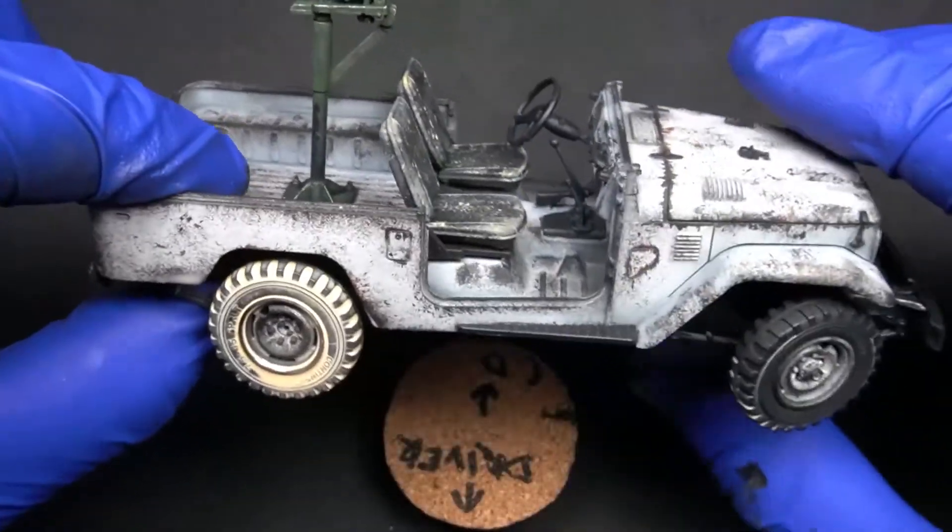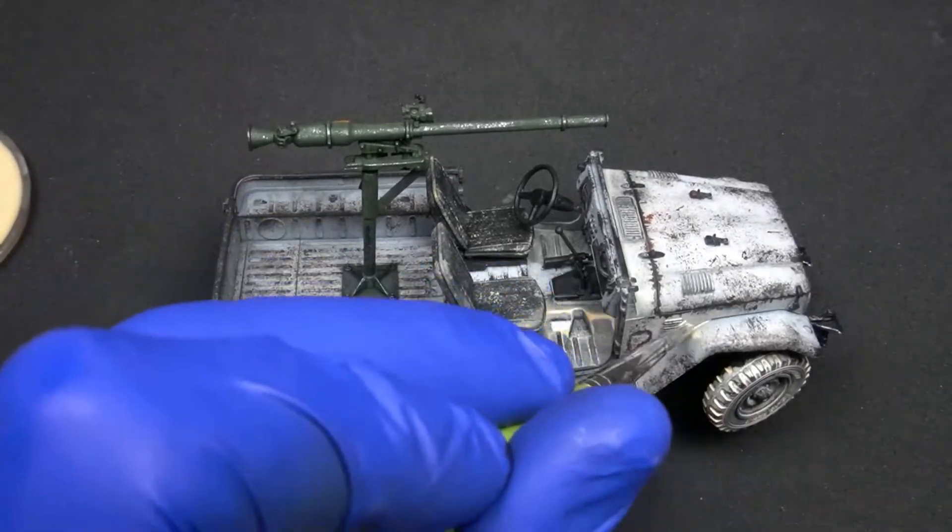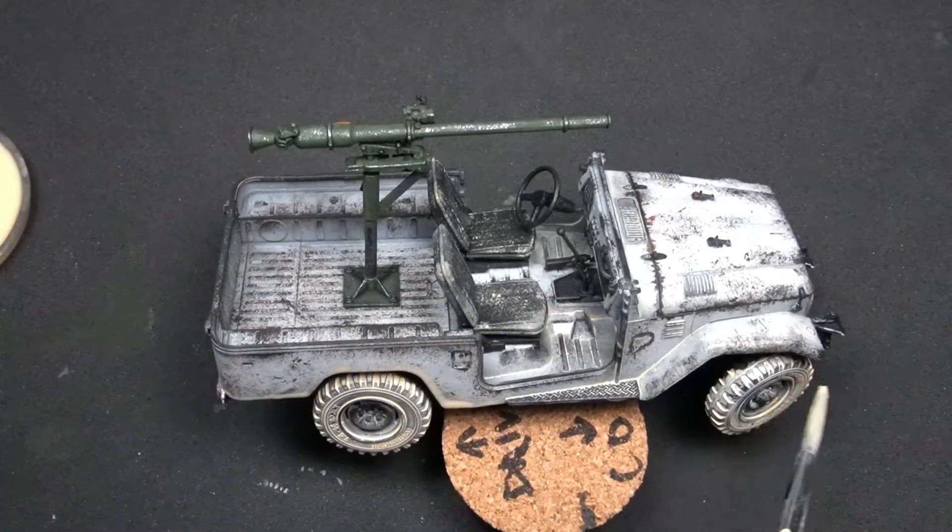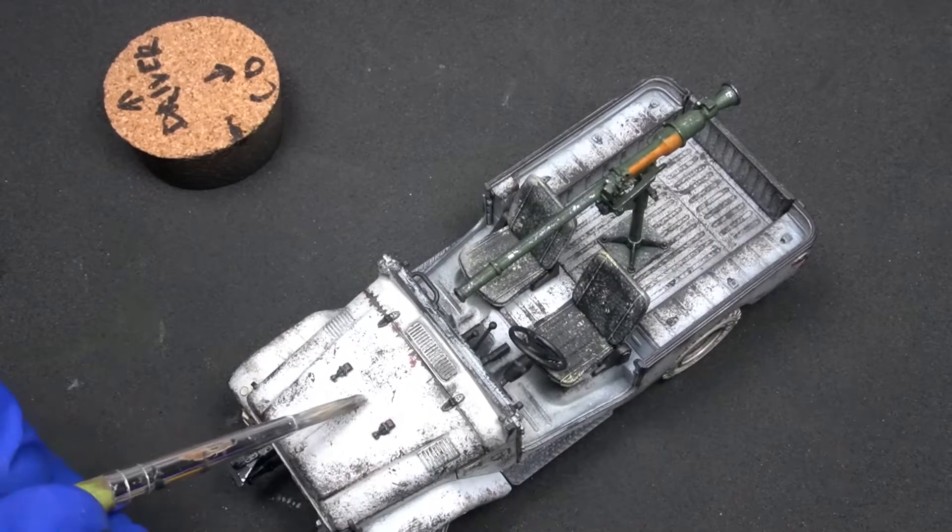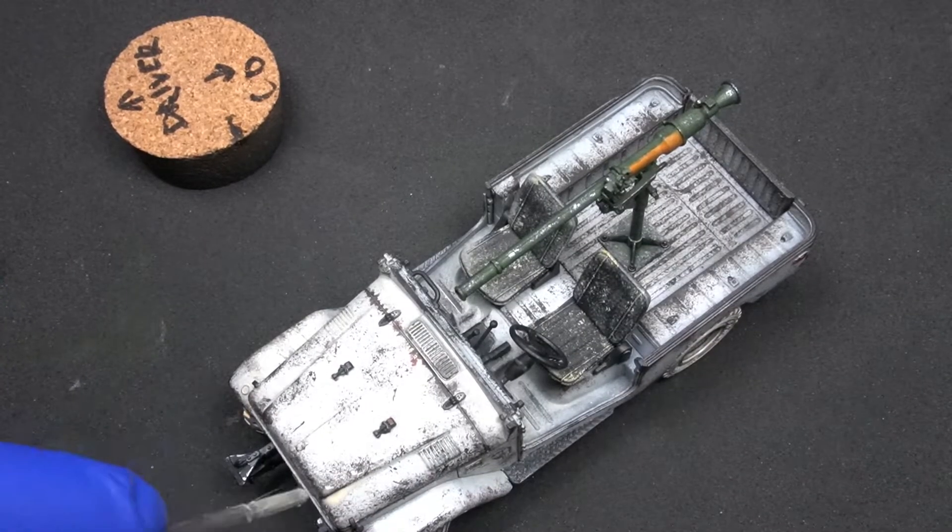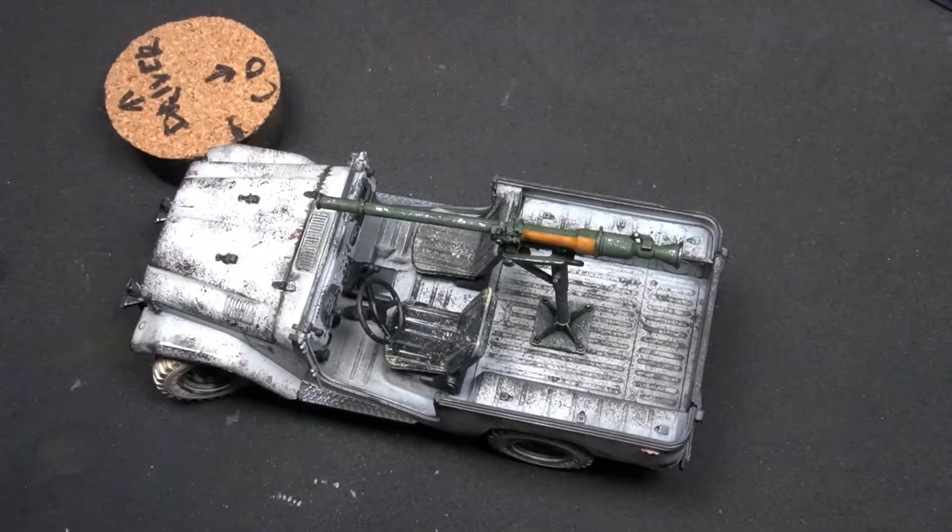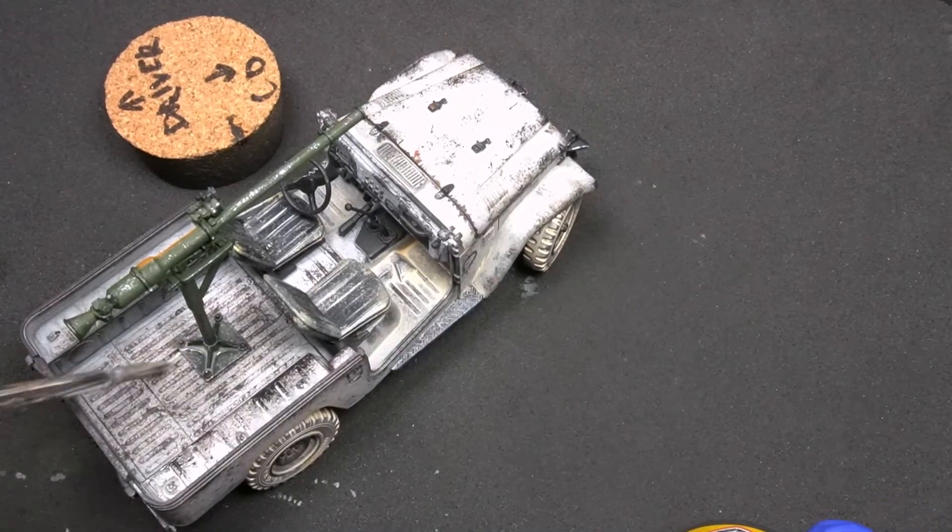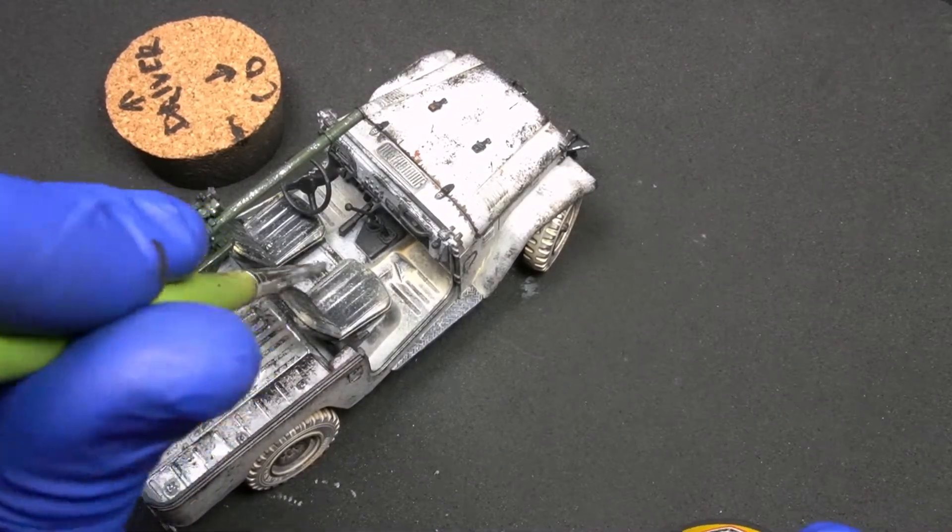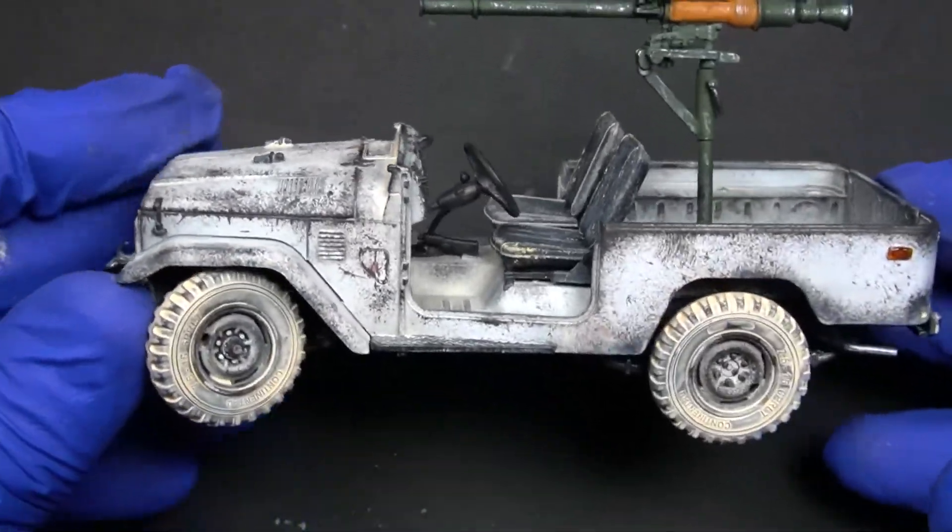This product can also be applied with an airbrush, and you can obtain truly great results with it. Sometimes we apply a bit of thinner before using the product itself. This will help us achieve that this African dust spreads over the surface of the vehicle and gets to all the areas that we want. Moreover, it will also add some randomness to the dust deposits, which will make our vehicle appear much more realistic.